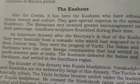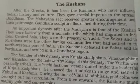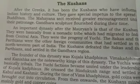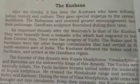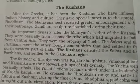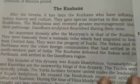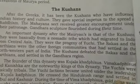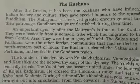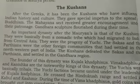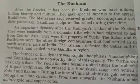An important dynasty after the Mauryas is that of the Kushanas. They were basically from a nomadic tribe — nomadic means they moved from place to place, not settled in one fixed location. They were tribes that migrated from Central Asia into India. They were the progeny of the Yuezhi, and alongside the Sakas and Parthians, were among the foreign communities that settled in the northwestern part of India. The Kushanas defeated the Sakas and Parthians.